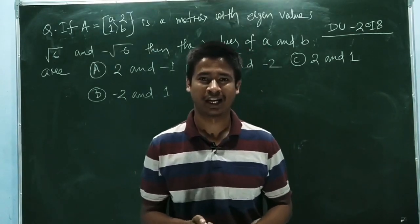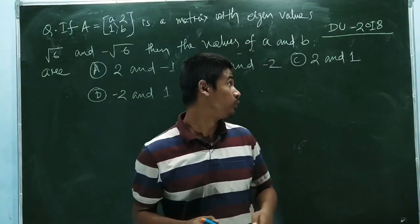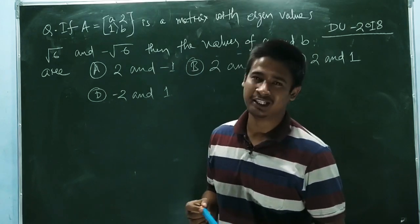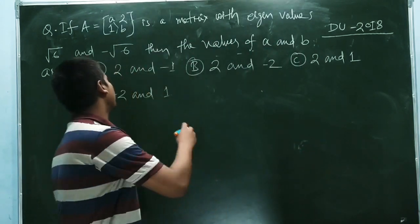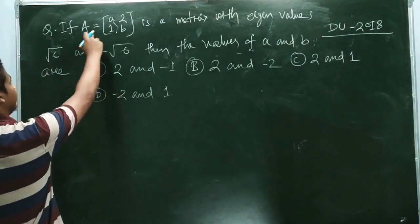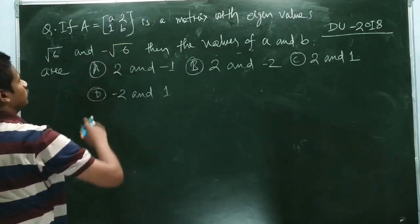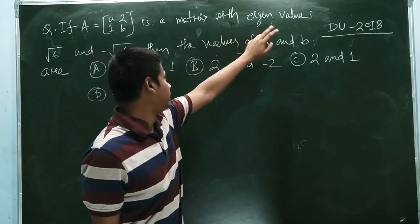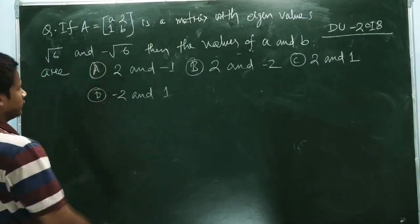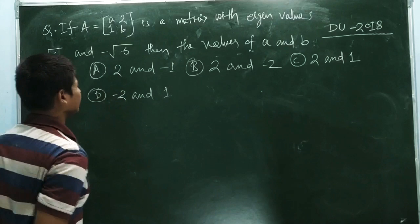Hello everyone. This is from Delhi University entrance exam 2018, a question from linear algebra. The question gives a matrix A, a 2 by 2 matrix with eigenvalues root 6 and minus root 6, and asks about the values of a and b.